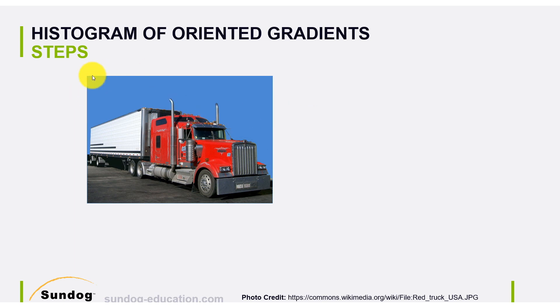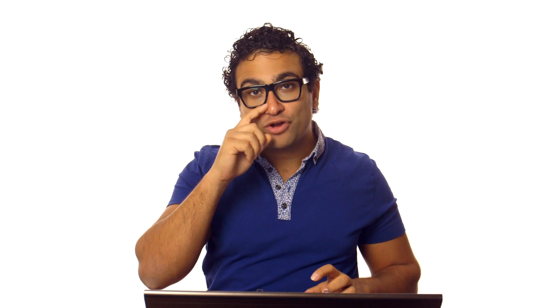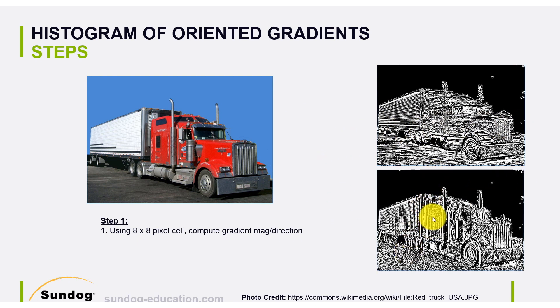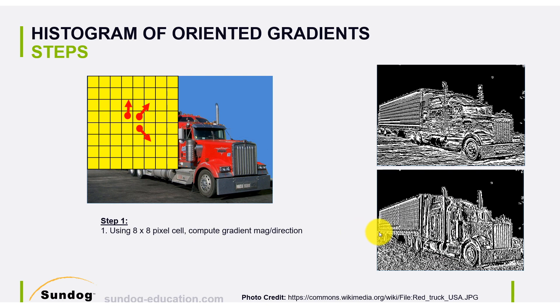Let's take a practical example with a truck image. To compute HOG features, you first define a cell — an 8×8 pixel zone — within which you'll represent the data as a HOG feature. Using 8×8 pixels, compute gradient magnitude and direction: apply Sobel-x to get the horizontal gradient, Sobel-y for the vertical gradient, then for each pixel compute gradient magnitude as √(gx² + gy²) and angle as arctan(gy/gx).